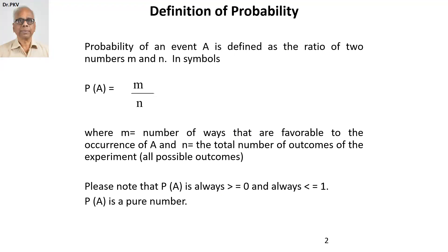Probability of an event A is defined as the ratio between two numbers m and n. In symbols, probability of A is equal to m divided by n.